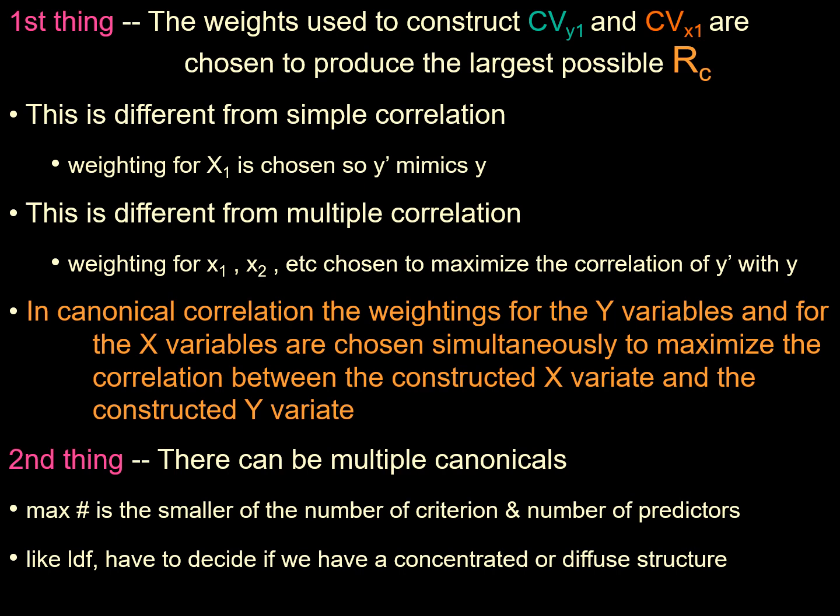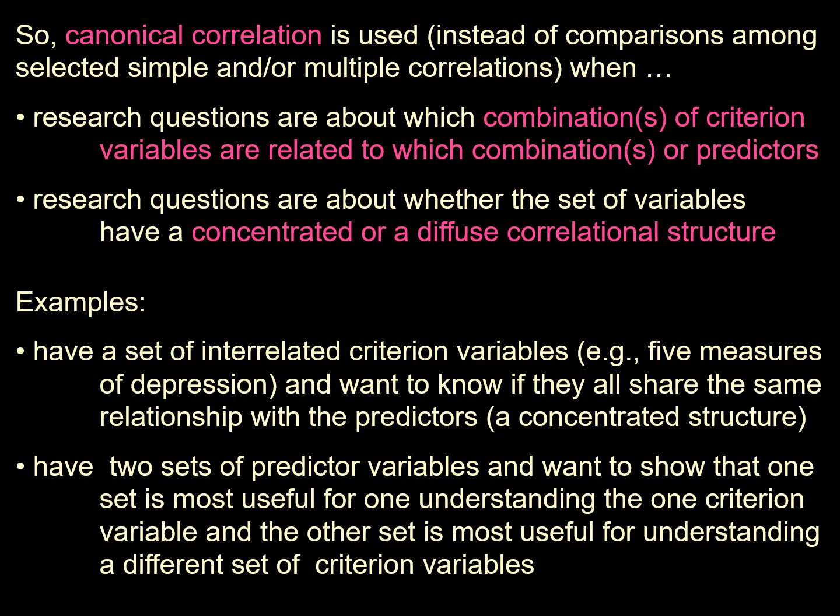There can be multiple canonical variates — the maximum number is the smaller of the number of criterion variables or number of predictors. We also have to decide whether we have a concentrated or diffused structure. Canonical correlation is used instead of simple or multiple correlations when research questions are about which combination of criterion variables relates to which combination of predictors, and whether the set of variables has a concentrated or diffused correlational structure.